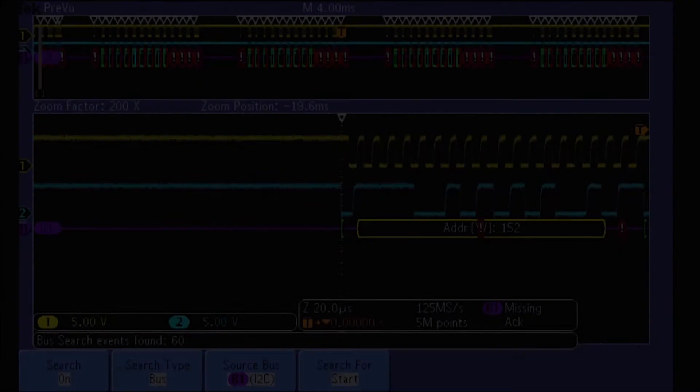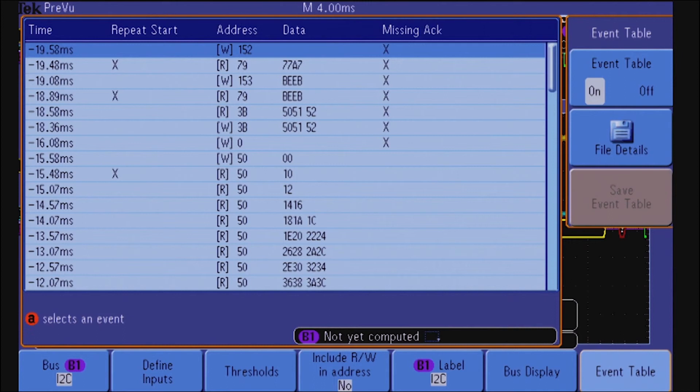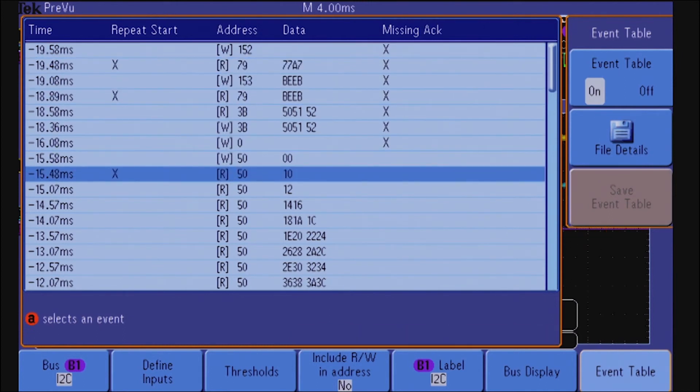To see an overview of all the messages you've captured, select the event table view. You'll be able to see the whole acquisition in a neat tabular format.